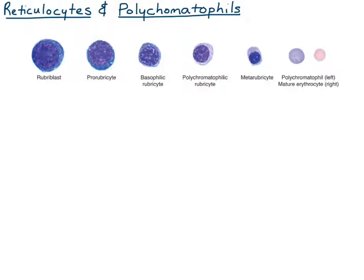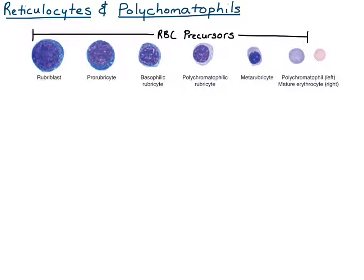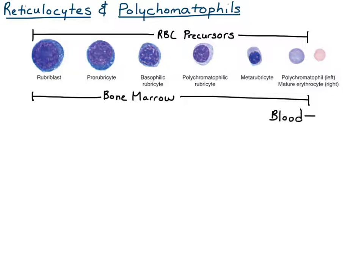This video is on reticulocytes and polychromatophils. The maturation sequence of red blood cells goes from the rubroblast to the mature red cell. Everything before the mature red blood cell is called a red blood cell precursor. Within the bone marrow, the rubroblast matures to prorubricite, rubricite, then metarubricite, and eventually polychromatophil. Very low numbers of metarubricites are released from the bone marrow, but many more polychromatophils are released. These polychromatophils and metarubricites eventually mature into mature red blood cells within the blood. This occurs in all species except the horse.